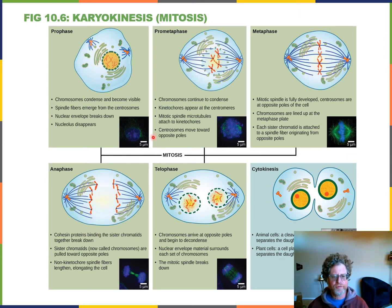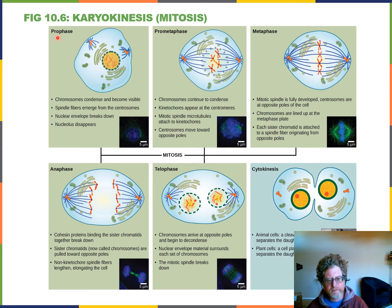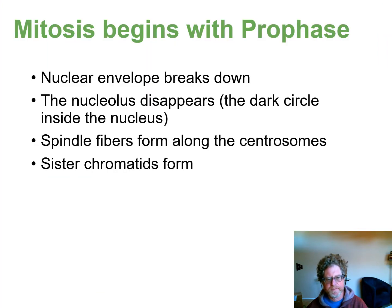The phases of mitosis are: prophase, prometaphase, metaphase, anaphase, telophase, and then cytokinesis. We will combine prophase and prometaphase and call them both prophase. In prophase, the nuclear envelope breaks down, the nucleolus disappears, and spindle fibers begin to form.